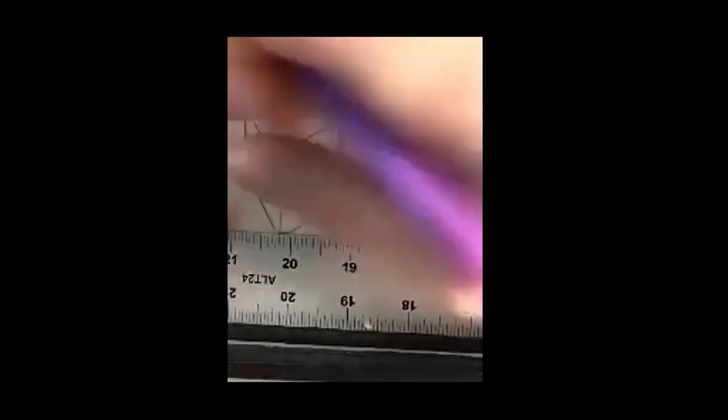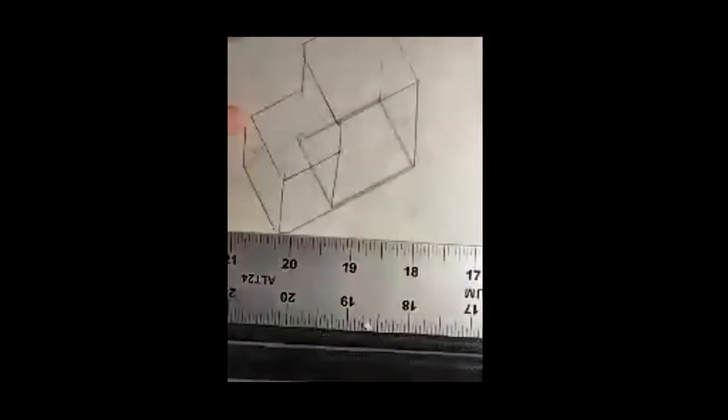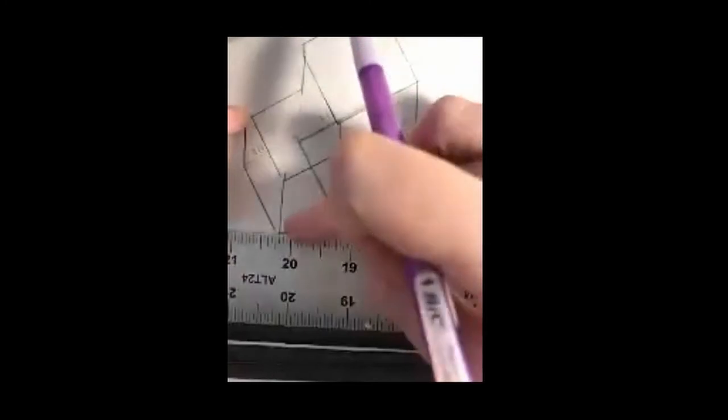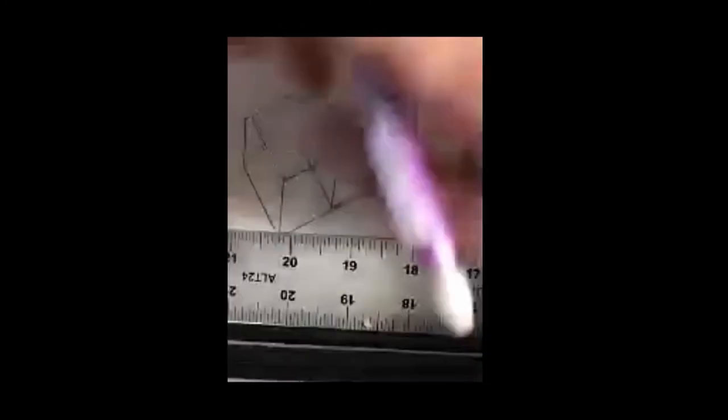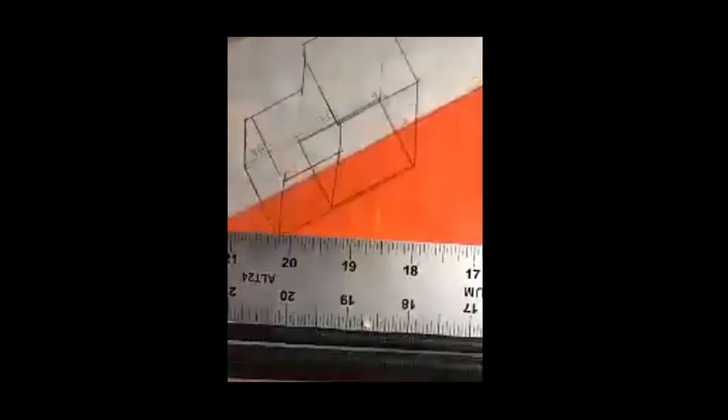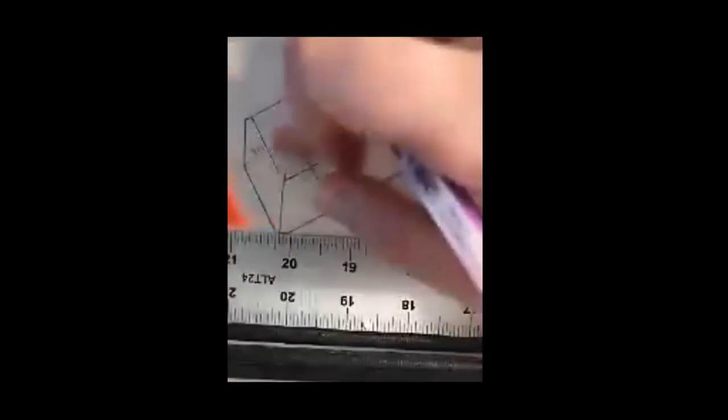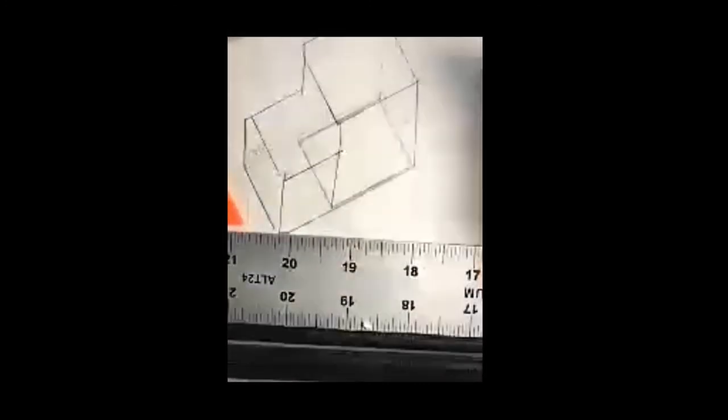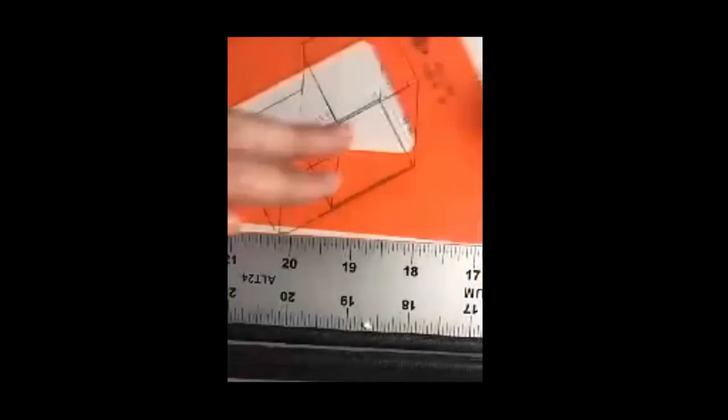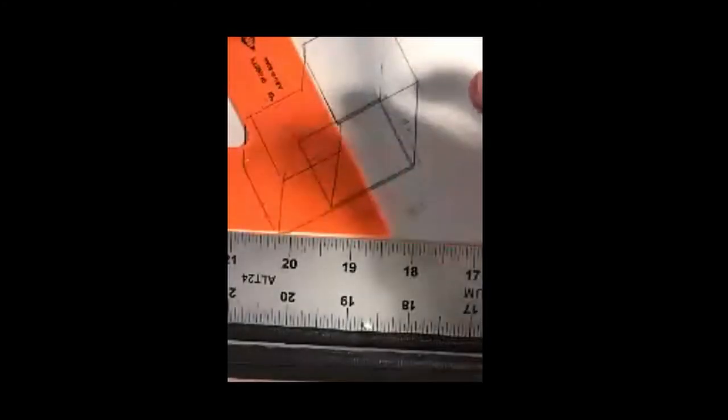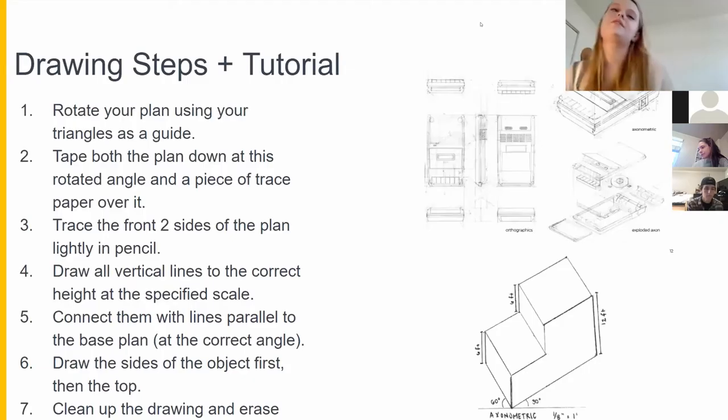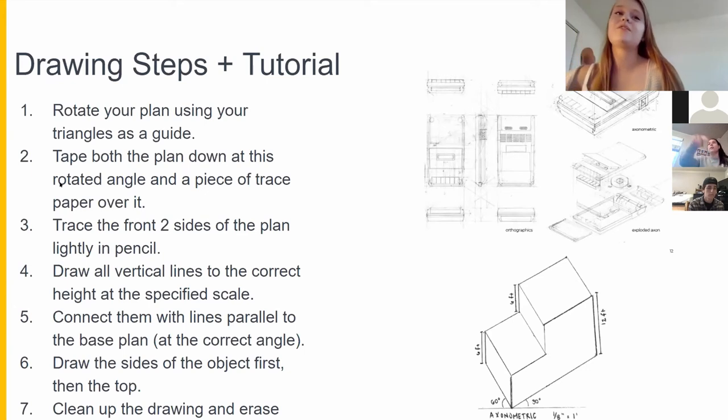So once again just going through the steps, you'll rotate your plan, tape it down, tape a piece of trace over it, and then you'll draw these front two lines of the plan at the angles they're at. So 30 and then 60. You'll draw all your vertical lines to the height they should be at and then all the horizontal lines parallel to that base plan. So here are those steps so you guys can review those as well in your small groups and kind of go through those on your own to help you reiterate how to go through each of those.